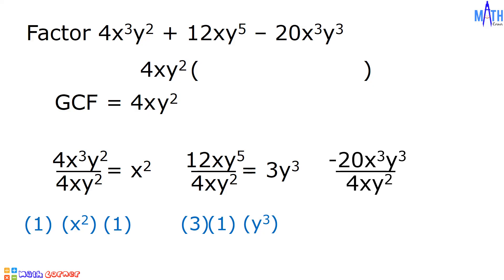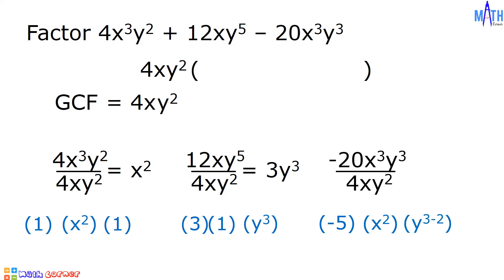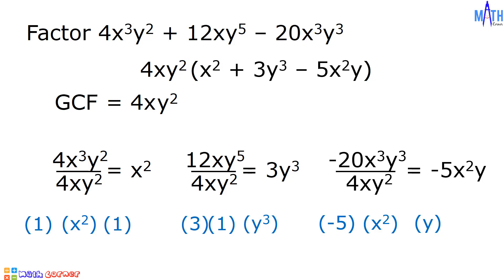Next, we have negative 20x cubed y cubed divided by 4xy squared. Negative 20 divided by 4 is equal to negative 5. x cubed divided by x is equal to x raised to 3 minus 1, which is equal to x squared. And y cubed divided by y squared is equal to y raised to 3 minus 2, which is equal to y. So negative 5 times x squared times y is equal to negative 5x squared y. And the other factor is x squared plus 3y cubed minus 5x squared y. And that is how to factor polynomials with common monomial factor.